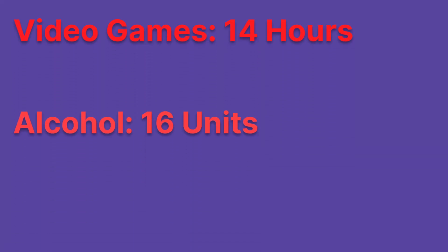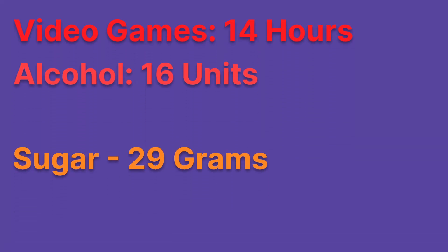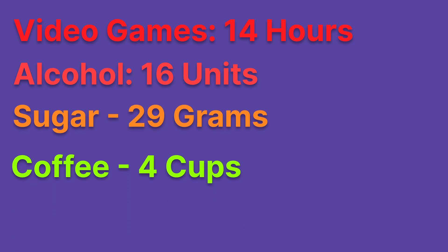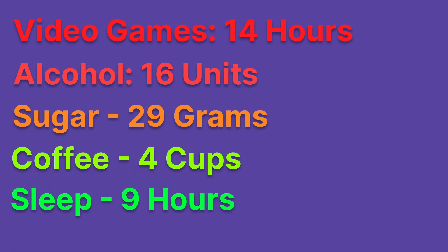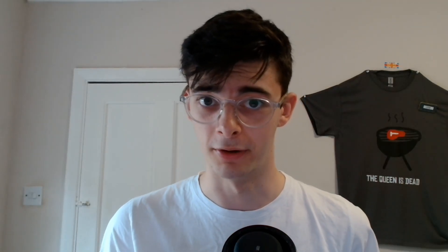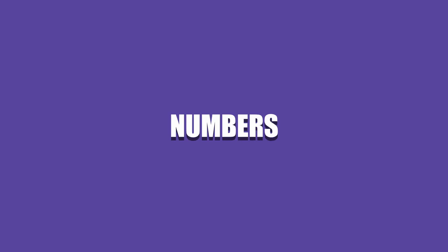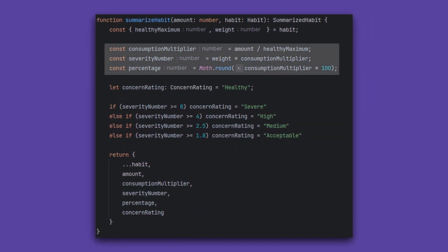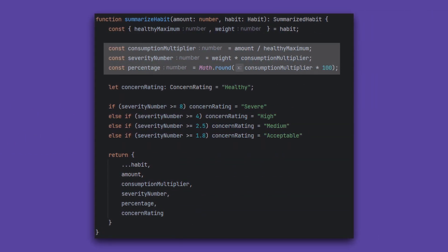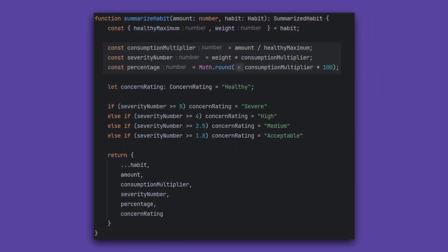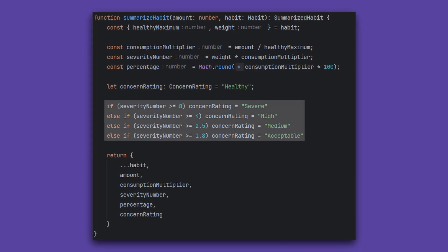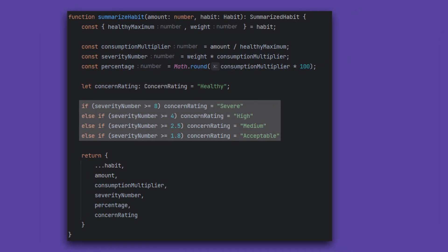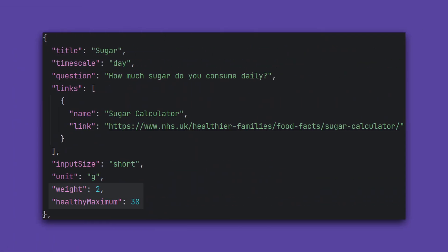We need to rank the severity of each habit the user has, but how do we do this? Very good question, my friend. Numbers. With this simple formula, we are able to assign severity ratings based on the inputs and give them a rank accordingly. The weight and healthy maximum would be stored in a JSON file.